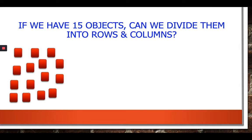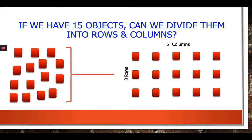What about if we have 15 objects, can we divide them into rows and columns? So notice that the squares now are just random. We don't have them arranged in an array, but if we did arrange them in an array so that we have three rows and five columns, we would have the same thing we did in our previous example. But we would have 15, the total number, divided by three rows is five columns.